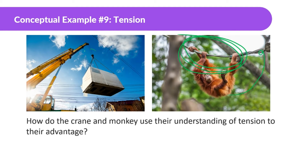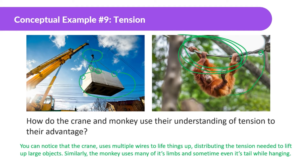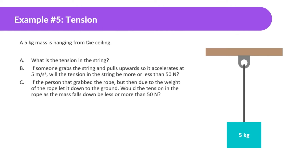If we look over at the crane, we can see there's not just one cable carrying the heavy load — there are four cables, distributing the amount of load onto each cable. The crane uses multiple wires to lift things up, distributing the tension needed to lift large objects. Similarly, the monkey uses many of its limbs and sometimes even its tail while hanging.